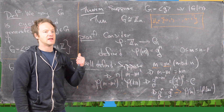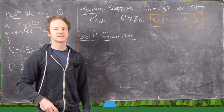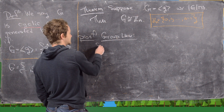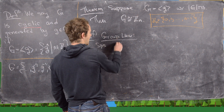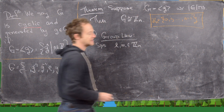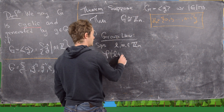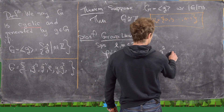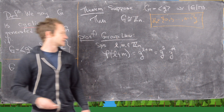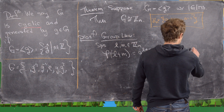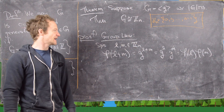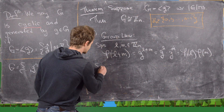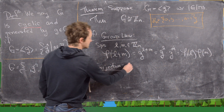Now let's check that the group law is satisfied. Suppose l and m are elements of ℤₙ. Then φ(l + m) = g^(l+m) = gˡ · gᵐ by exponent rules, which equals φ(l) · φ(m). So the group law is preserved — there's really nothing to it in this case.